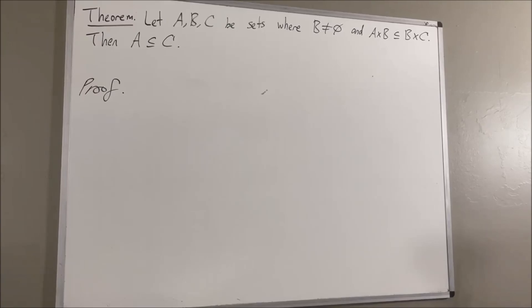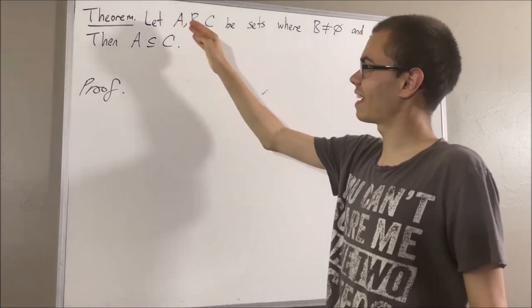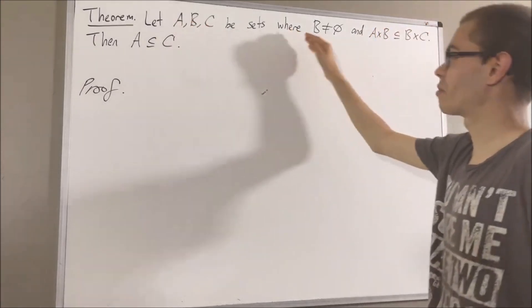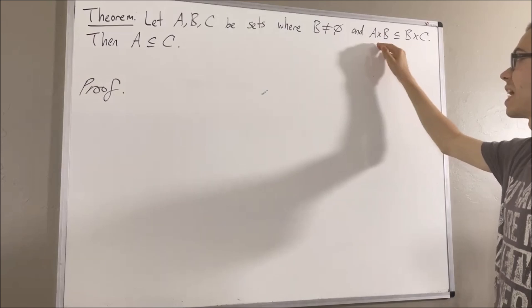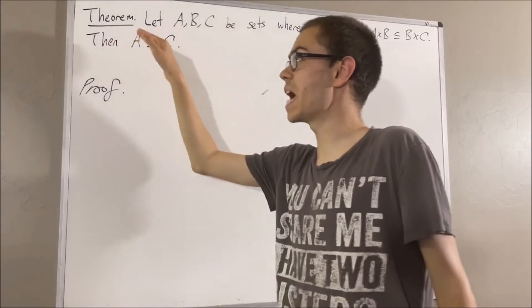Hello! In this video we're going to prove the following theorem. Let A, B, and C be sets, where B is not empty and A times B is a subset of B times C. Then A is a subset of C.